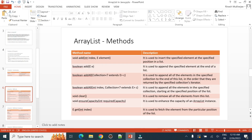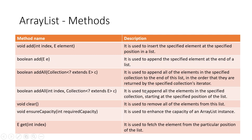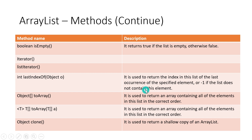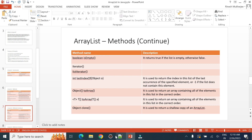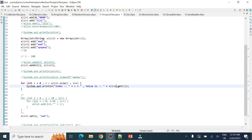The isEmpty method returns true if the list is empty. Iterator and ListIterator are explained in the Iterable interface section. The lastIndexOf method returns the index of the last occurrence of the specified element. Since ArrayList can contain duplicate elements, this method is useful for finding the last occurrence among duplicates.